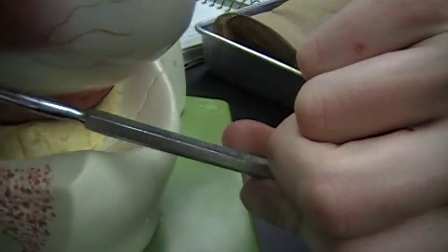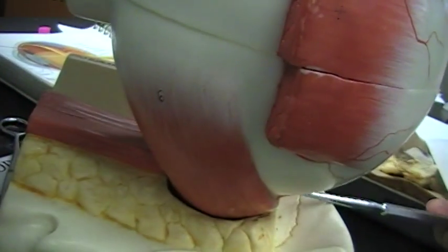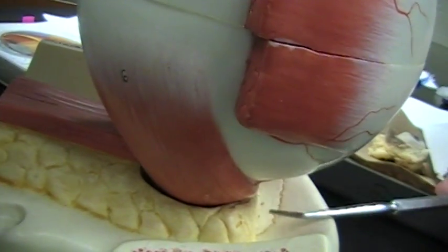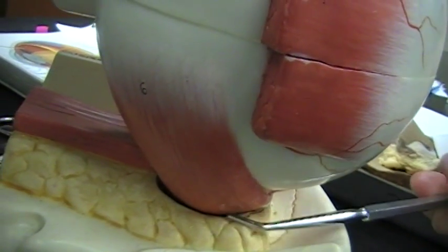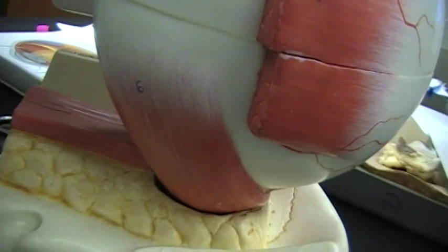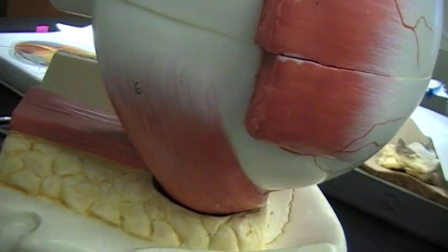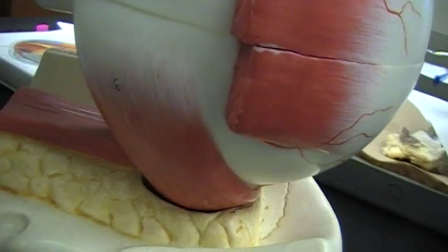This muscle right here is called the inferior oblique muscle, and it elevates the eye and turns the eye laterally, and it is also controlled by the oculomotor nerve.